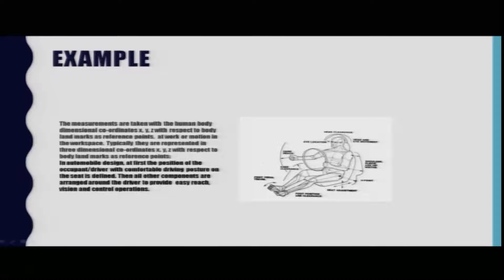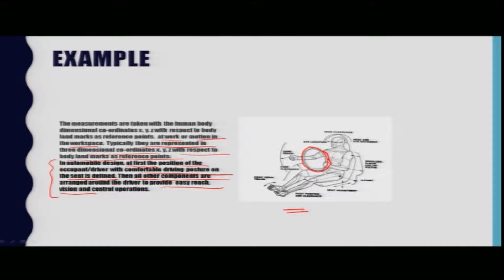As an example, you can see a person sitting on the driving seat inside a car, holding the steering wheel. Measurements are taken using human body dimensional coordinates x, y, z with respect to body landmarks as reference points. In automobile design, the position of the driver with a comfortable driving posture on the seat is first defined, then all other components are arranged around the driver to provide easy reach, vision, and control operation.